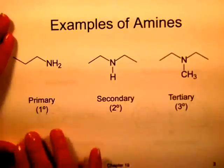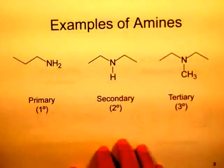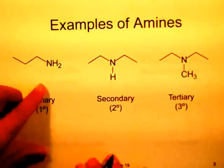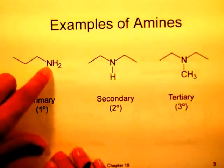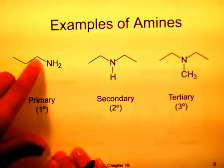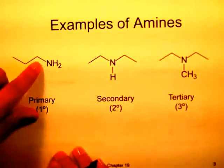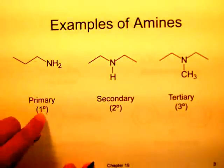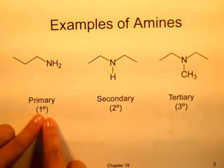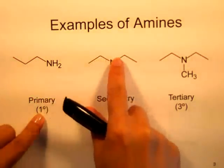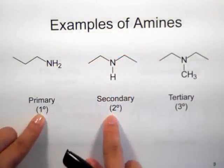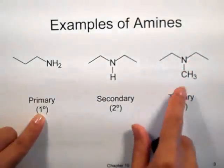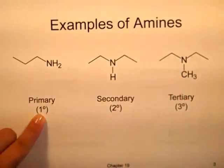First you have to start by classifying the amine. We have primary, secondary, and tertiary amines, and you count how many alkyl groups are attached to the nitrogen. This nitrogen has one carbon attached to it — it doesn't matter how long the carbon chain is, it just matters that it has only one alkyl group attached to it, so it's classified as a primary amine. This nitrogen has two carbons attached to it, so it's classified as a secondary amine. And this one has three carbons attached to the nitrogen, so this is a tertiary amine.